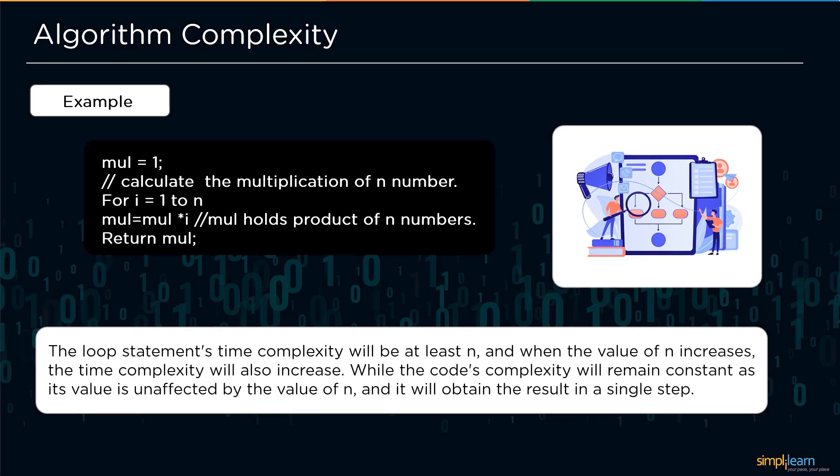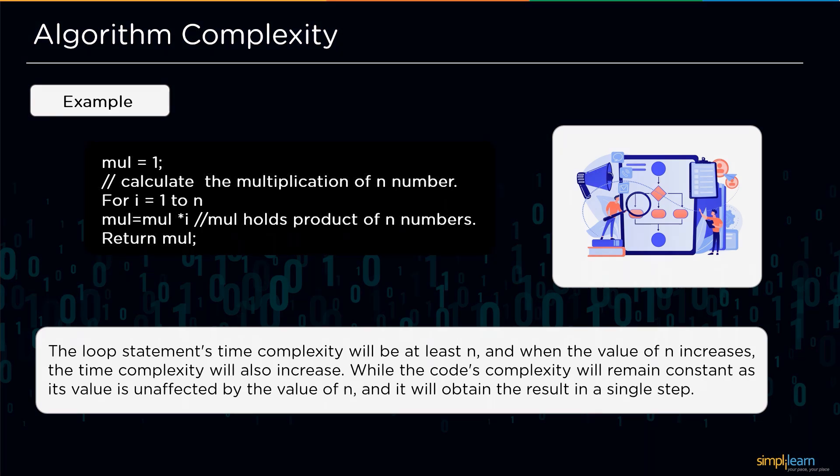If we want to find out a multiplication of n numbers, we can do it by executing a loop from 1 to n, then calculating multiplication. When the loop ends, multiplication holds the n numbers multiplication, and last we return the calculated multiplication. The loop statement's time complexity will be at least n, and when the number n increases, the time complexity will also increase. While the code's complexity that returns multiplication will remain constant because its value is unaffected by the value of n and it will obtain the result in every single step.